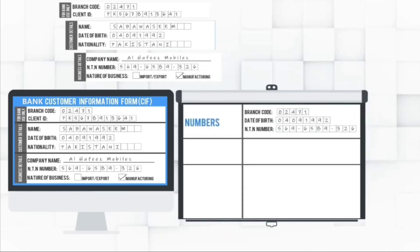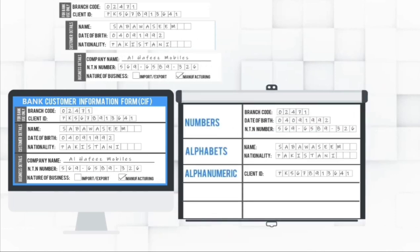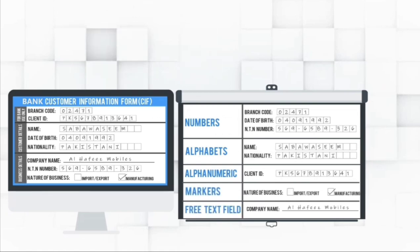After that, Vision Engine will recognize numbers, alphabets, alphanumeric, markers, and free text fields.